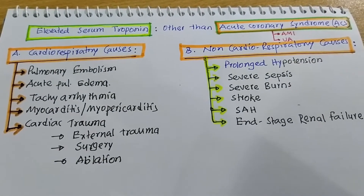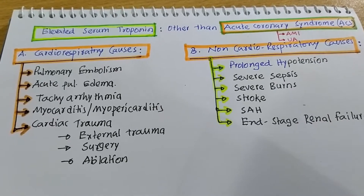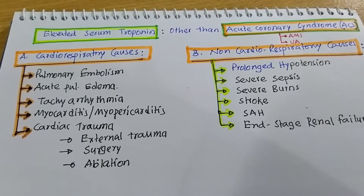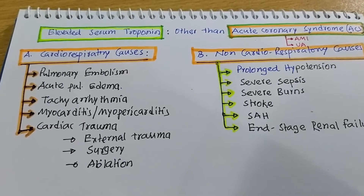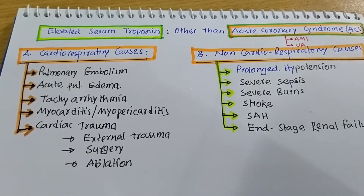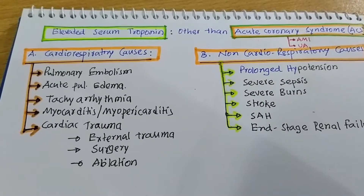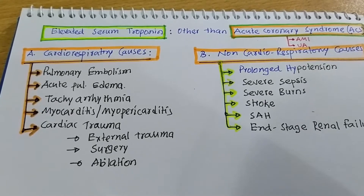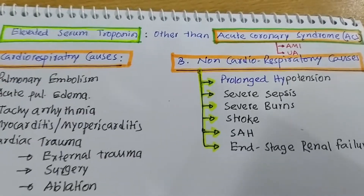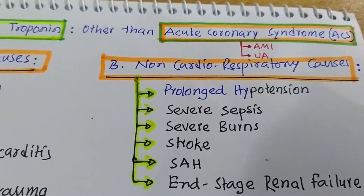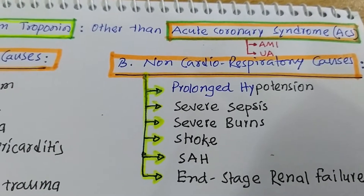Hello, this is Dr. Sanjoy Kumar Rai. I would like to talk on the causes of elevated serum troponin other than acute coronary syndrome. As we know, being a medical student or doctor, the most important and popular cause of elevated serum troponin T or troponin I is acute coronary syndrome — that means acute myocardial infarction (AMI) or unstable angina (UA).